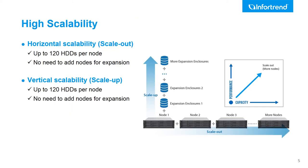For high scalability, EonStore CS supports scale-up and scale-out capabilities to provide a cost-effective expansion solution. You can start small with a single node only and expand the cluster without any system downtime. To improve the overall performance, you can simply add another node into the cluster. For capacity expansion, you can just add JBODs into the existing nodes.